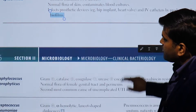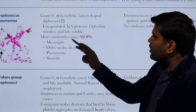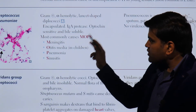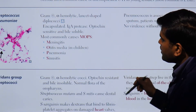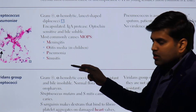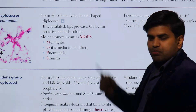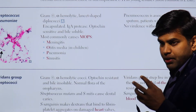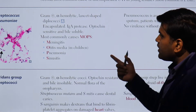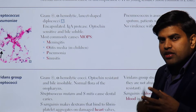So streptococcus pneumoniae is gram positive, alpha hemolytic, lancet-shaped diplococci, encapsulated, with IgA protease, optochin sensitive, and bile soluble. The diseases it mainly causes are meningitis, otitis media, pneumonia, and sinusitis. The encapsulation and IgA protease are two very medically important virulence factors. Since it is encapsulated, it inhibits phagocytosis.